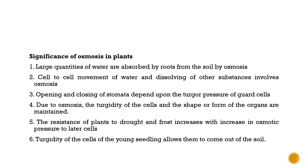Regarding the significance of osmosis in plants: large quantities of water are absorbed by roots from the soil by osmosis; cell-to-cell movement of water and dissolving of substances involves osmosis; and even the opening and closing of stomata is dependent on the turgid pressure of guard cells. Osmosis also maintains the turgidity of cells and the shape and form of organs, and the resistance of plants to drought increases with an increase in osmotic pressure. Turgidity of cells in young seedlings allows them to emerge from the soil.